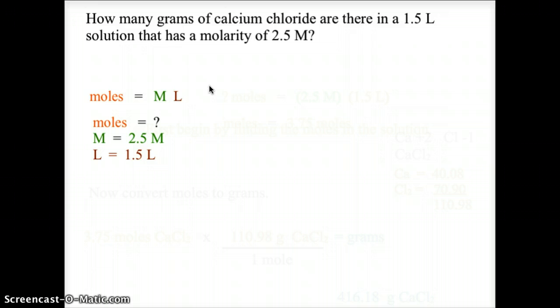for moles, because we're looking for grams, and the only way to get to grams is through moles. Moles equals molarity times liters. In this case, we have a 2.5 M solution at 1.5 liters, and we need to find the moles.